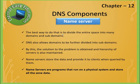It also becomes unreliable because in case of any failure the data becomes inaccessible, so maintaining it is tough and if there is any loss, retrieving the data is also very tough. The solution to this problem is to distribute the information among many computers by dividing the entire space into many domains and subdomains.